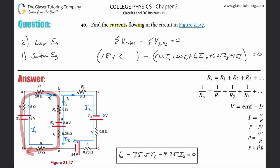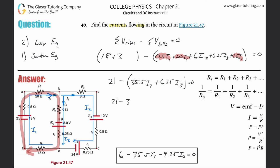Combining like terms: rises total 18 + 3 = 21. For I1 terms: 20 + 15 + 0.5 = 35.5·I1. For I3 terms: 6 + 0.25 = 6.25·I3. After distributing the negative sign, the second loop equation is: 21 − 35.5·I1 − 6.25·I3 = 0.